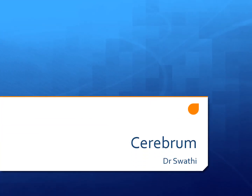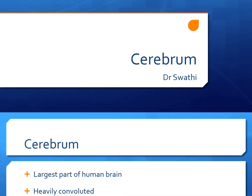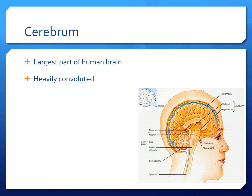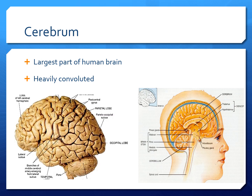Hello everybody, today I am talking about Cerebrum. Cerebrum is the largest part of the human brain. It is heavily convoluted, that means folded, to fit in the rigid cranial cavity.